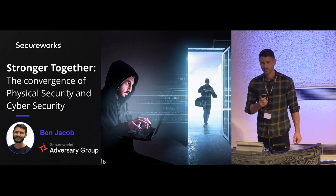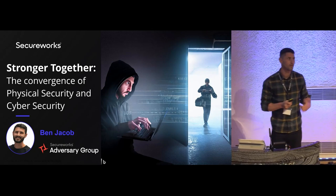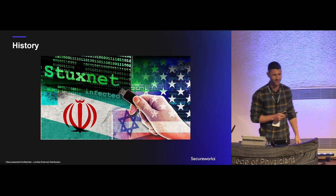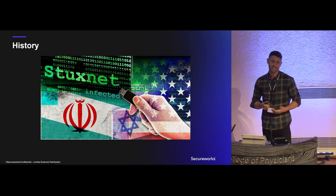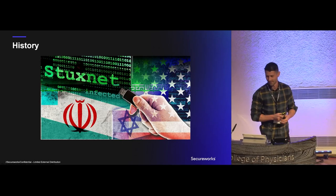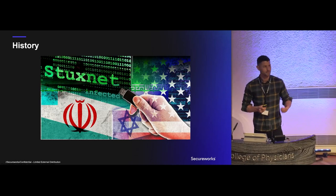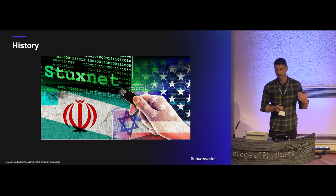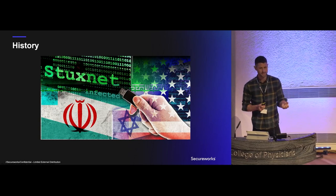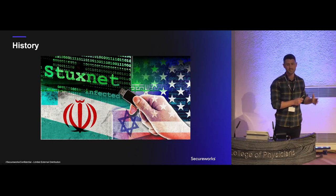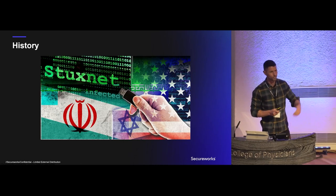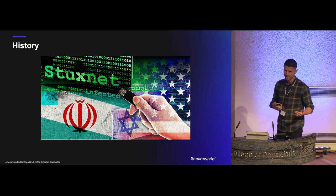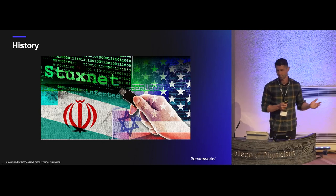I started thinking about the most well-known stories where a physical threat has had an impact on digital assets. Stuxnet is the obvious one — our previous speaker already introduced it. Stuxnet was a worm that impacted the Iranian nuclear plant. In order to get that worm into the plant, a malicious scientist was paid to go on site and plug in a USB stick, because the nuclear plant was an OT environment not connected to the internet. Stuxnet caused several years of delay to the Iranian nuclear program.